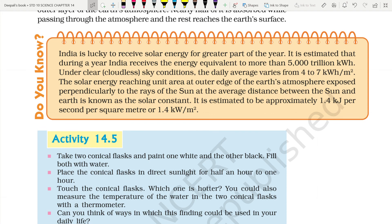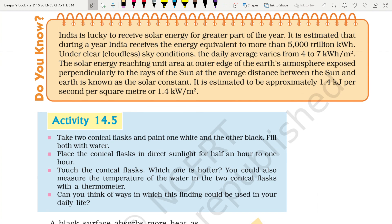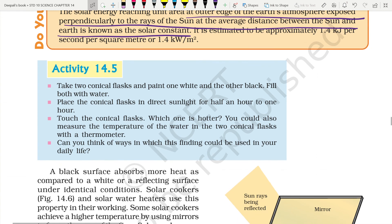The solar energy reaching a unit area at the outer edge of Earth's atmosphere, exposed perpendicular to the rays of the sun at the average distance between the sun and Earth, is known as the solar constant. It is approximately 1.4 kilojoules per second per square meter, or 1.4 kilowatts per square meter. If we are able to harness this solar energy, it is a tremendous amount that can replace any other source of energy.